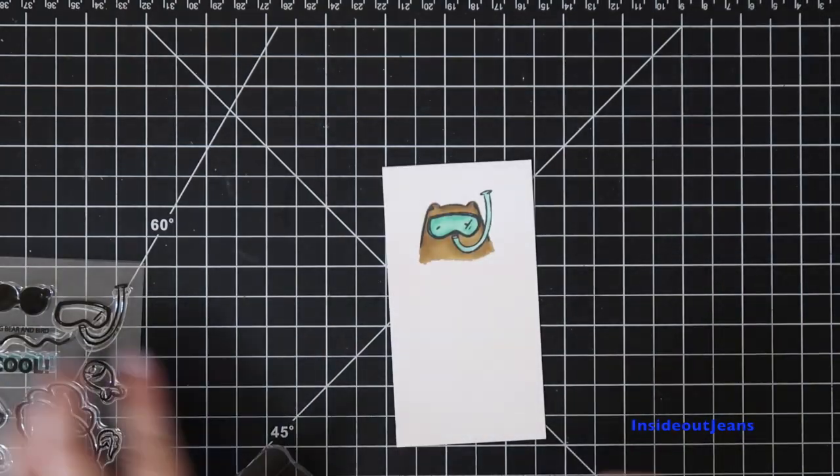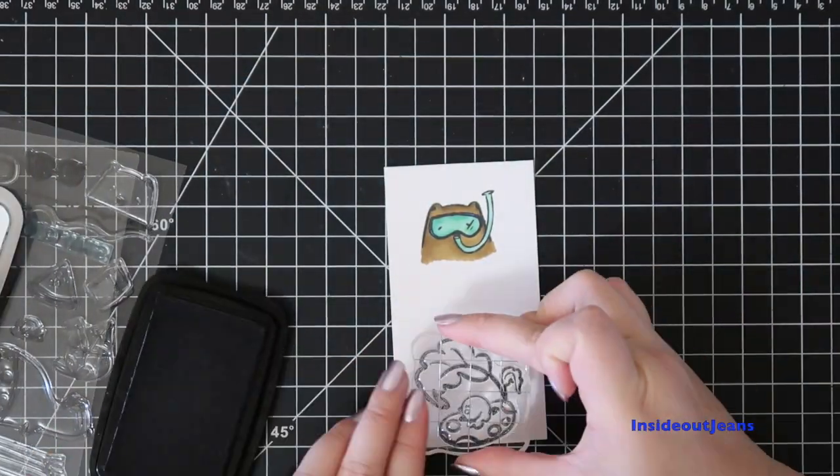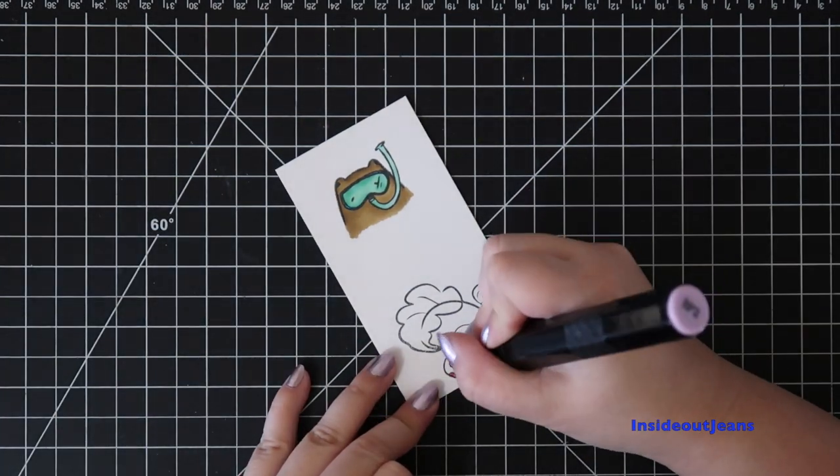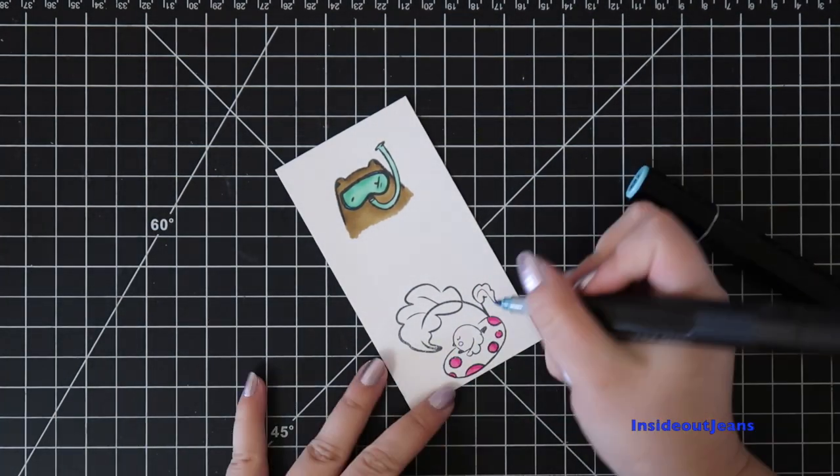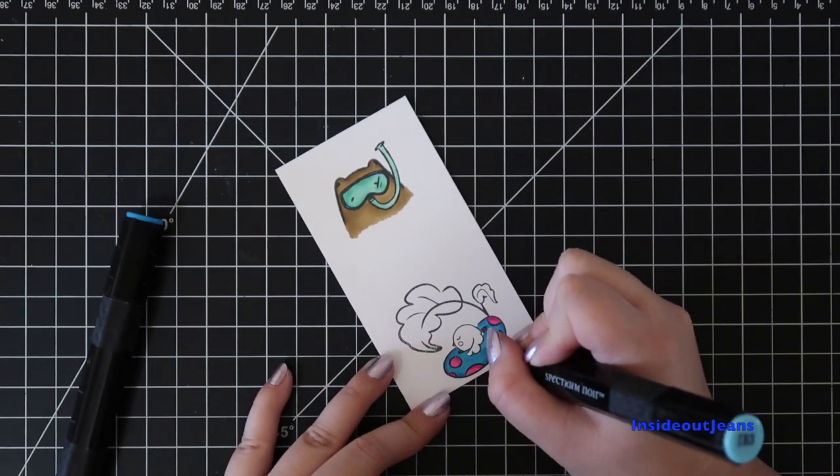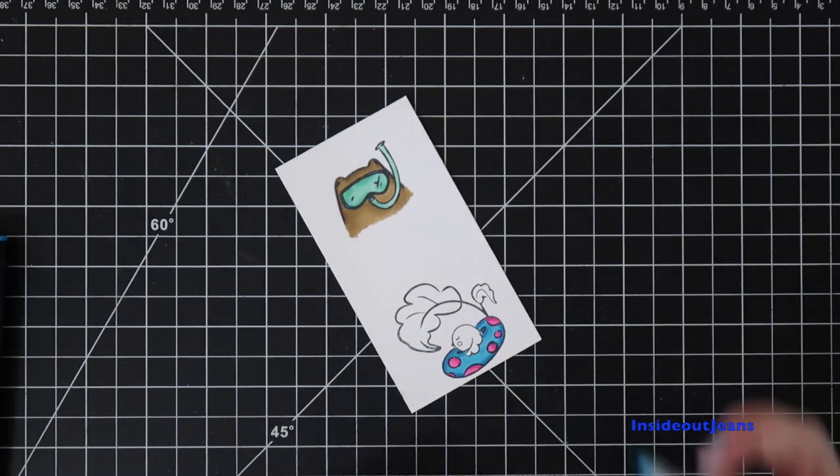Once I finish with the bear, I pull out another stamp. It's the little bird that's in the little floaty. I decided to color it with some pinks and blues. I just wanted it to pop in the water, and I personally just love pink.